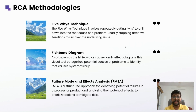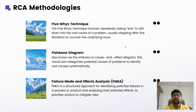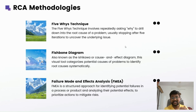The second methodology is the Fishbone diagram, also known as the Ishikawa diagram. Ishikawa was a scientist from Japan who invented this diagram, which creates a cause-and-effect diagram. The third technique is Failure Mode and Effect Analysis, or FMEA — a structured approach for identifying potential failures in a process. With FMEA, you analyze the product, identify the potential effect, prioritize actions, and mitigate the risk in the process or product.